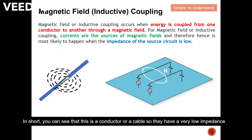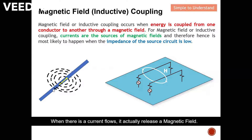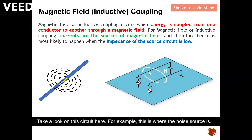So in short, you can see that this is a conductor or cable — they have very low impedance. When current actually flows — as you learned in school — there is some magnetic flux that is released. This is what we know as the magnetic field. This is how magnetic field or inductive coupling actually occurs: when there's a current flow, it releases the magnetic field, and that's how we have this issue of magnetic field coupling.